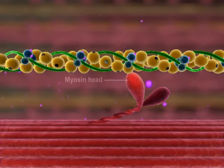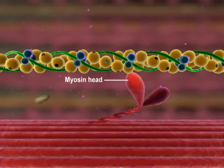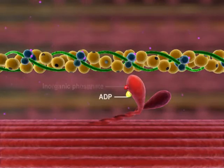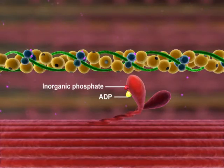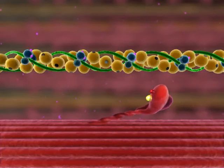The myosin head must be activated before a crossbridge cycle can begin. This occurs when ATP binds to the myosin head and is hydrolyzed to ADP and inorganic phosphate. The energy liberated from the hydrolysis of ATP activates the myosin head, forcing it into the cocked position.